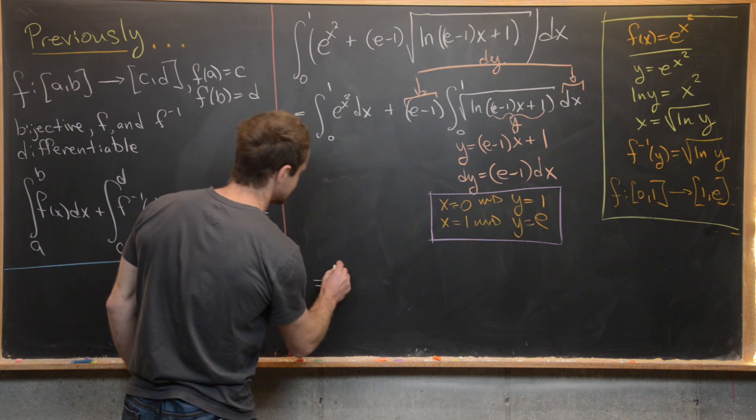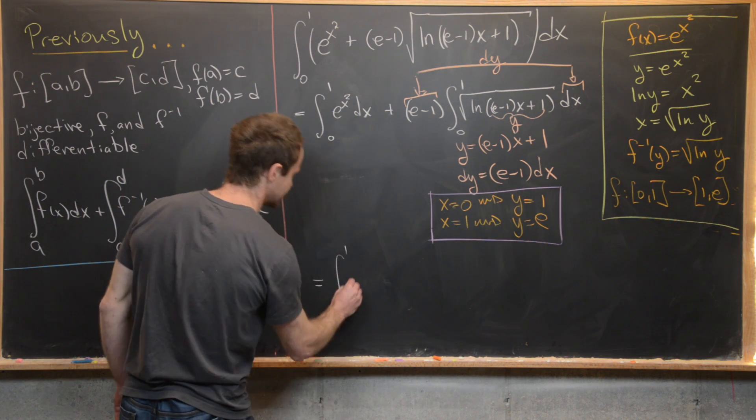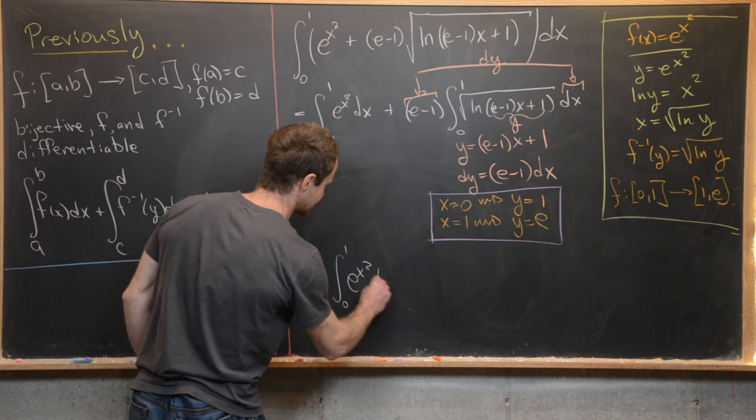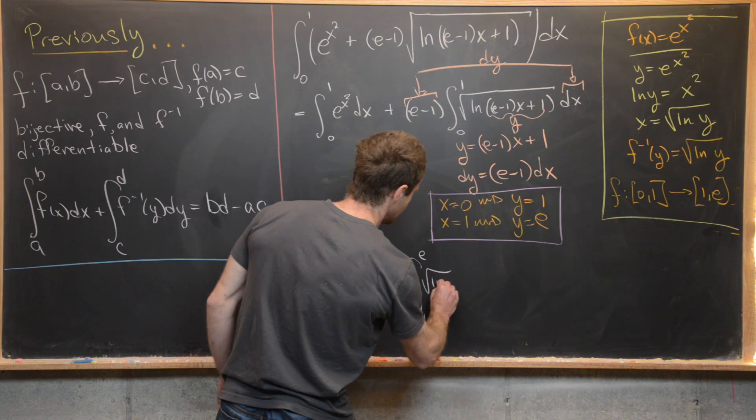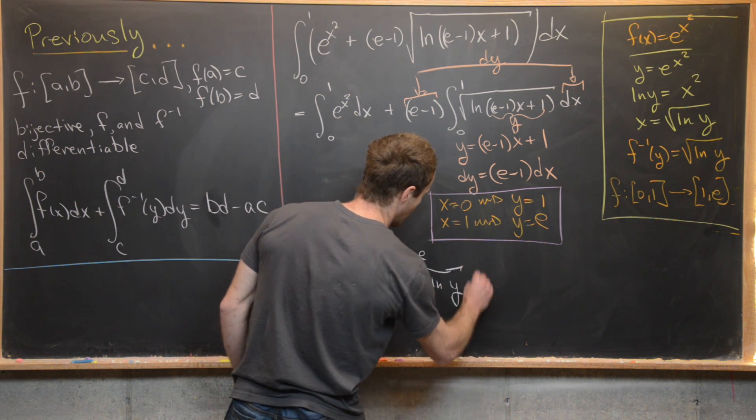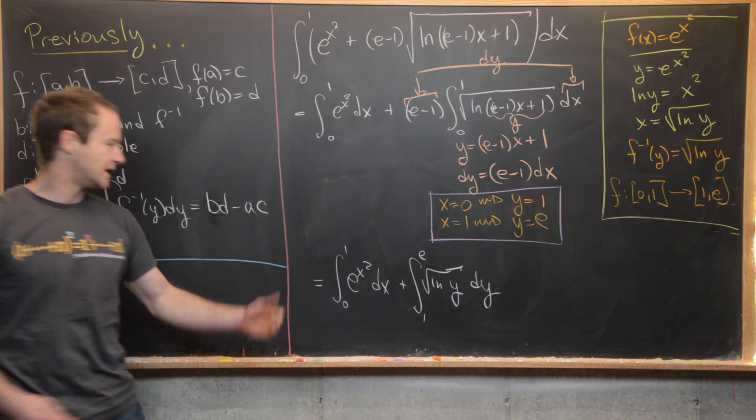So now bringing everything down, we have this is equal to the integral from 0 to 1 of e to the x squared dx plus the integral from 1 to e of the square root of the natural log of y dy.